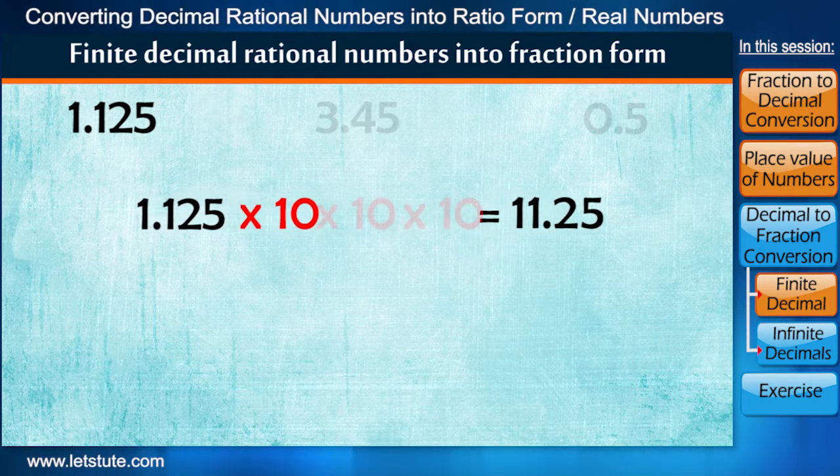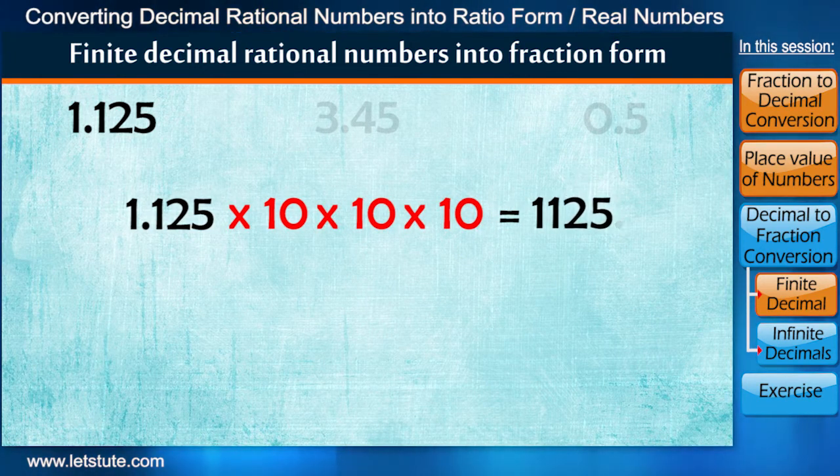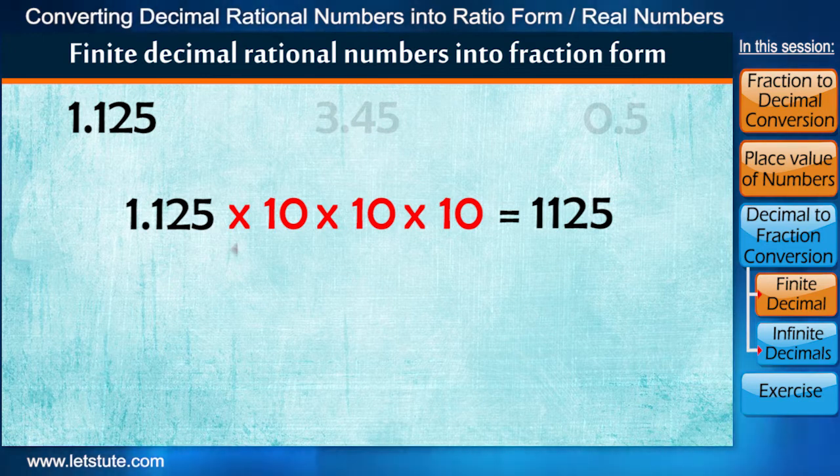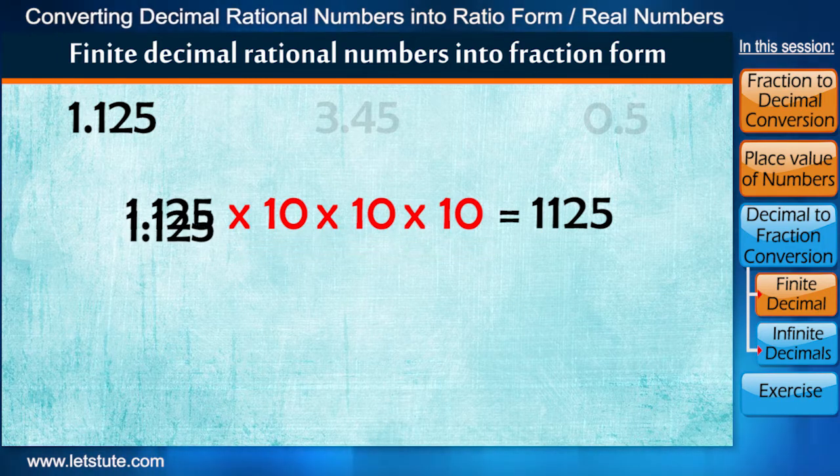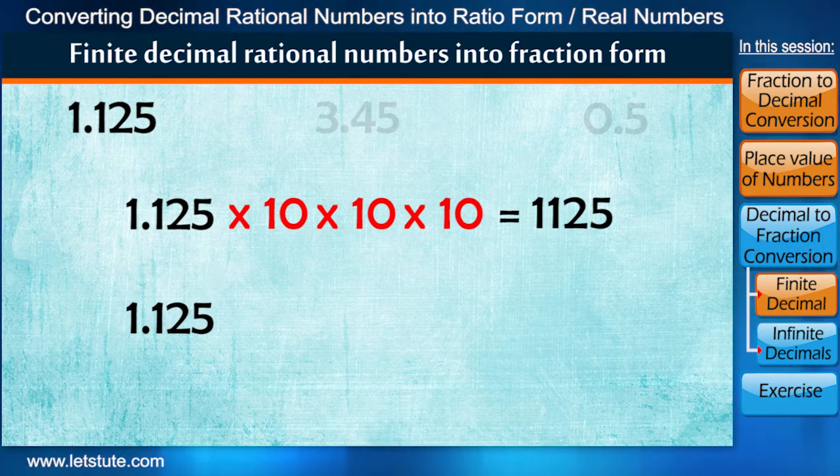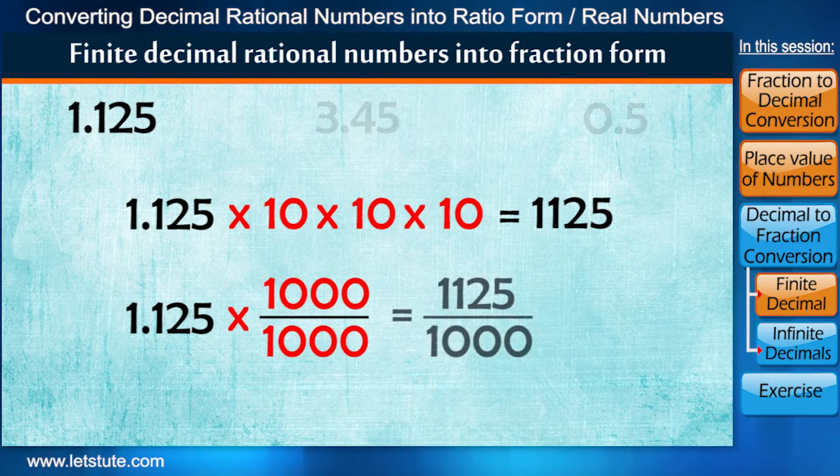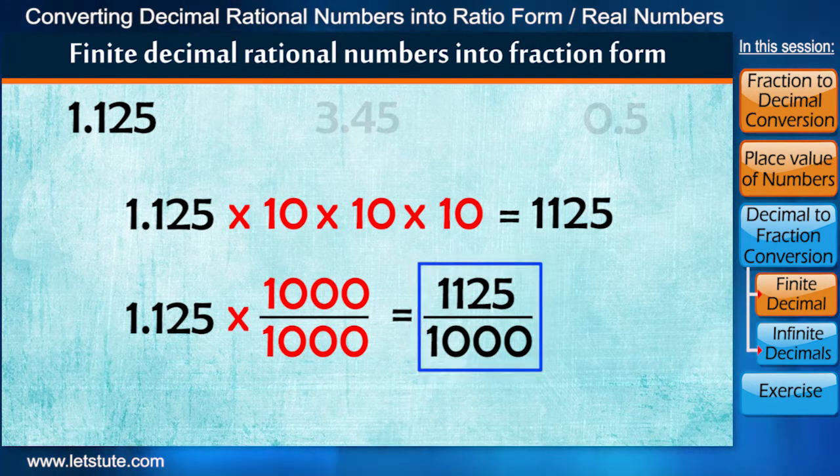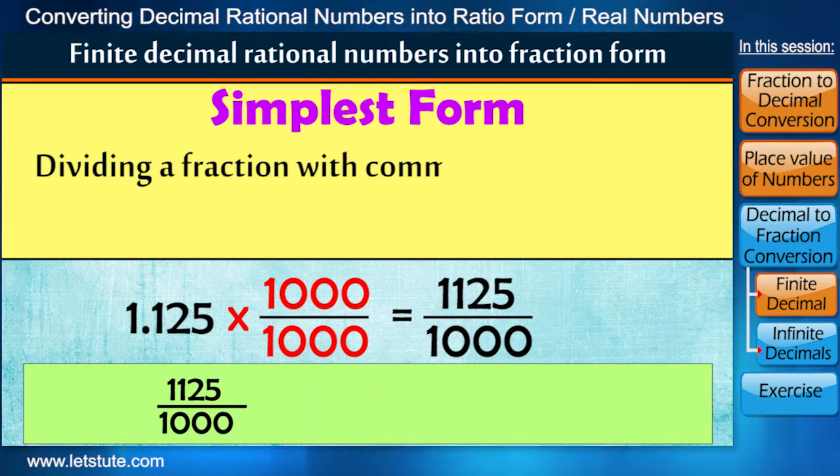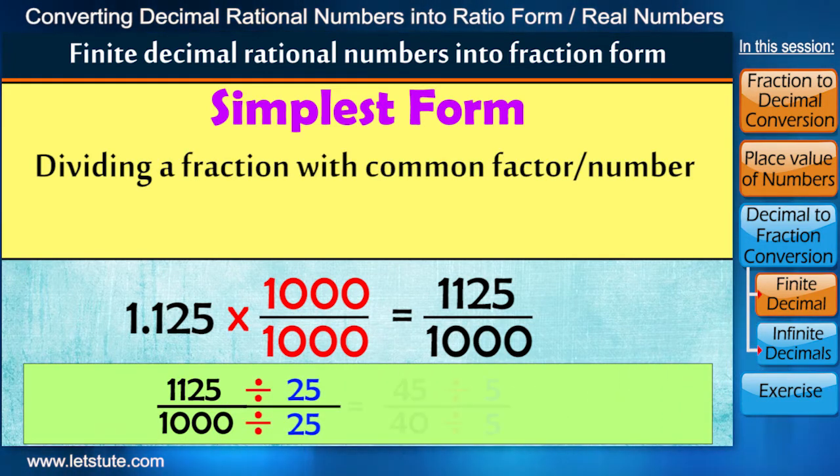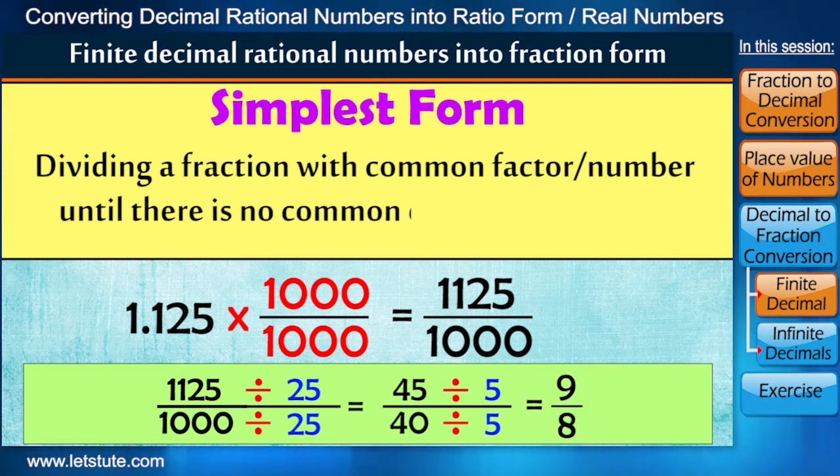That means we have to again multiply by two tens to remove the decimal point. So multiplying by three tens is as good as multiplying by 1000. Therefore, to write the number 1.125 in fraction form, we multiply and divide by 1000. We also write this fraction into its simplest form, and by simplest form we understand that we divide this fraction with common factors until there is no common divisor left except 1.